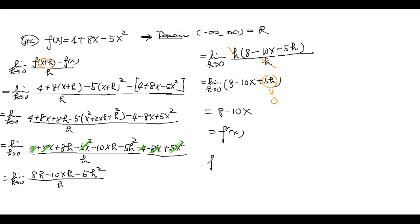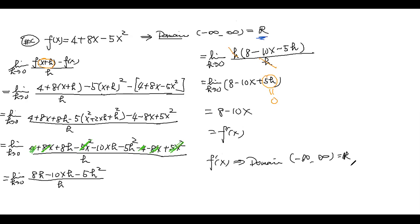So f′(x) = 4 − 10x. The domain of f′(x): it's a polynomial, so it's the same — negative infinity to positive infinity, or the entire real number line. The function and derivative have the same domain.